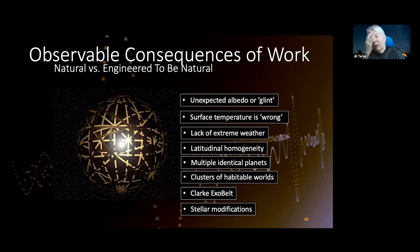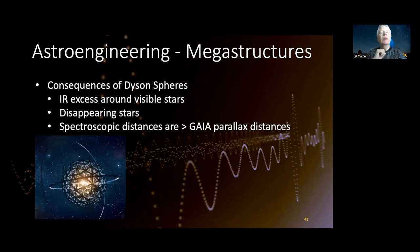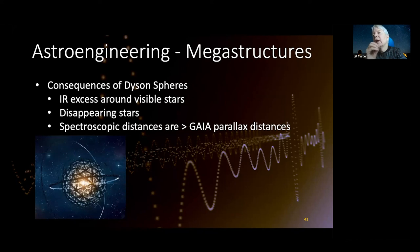If you do enough modification in a solar system, you will eventually have an influence on the star itself. In terms of megastructures, you would see an infrared excess versus the stellar type. You might see the star over centuries disappear because the light is blocked by megastructures. And finally, you might end up with a population of stars whose spectroscopic distances are greater than the parallax distances from Gaia and its subsequent missions, because you've actually dimmed the star with your megastructure.